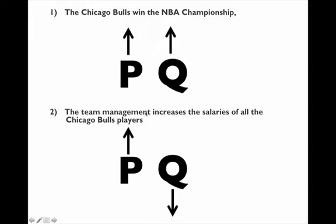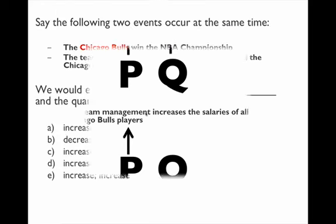So when you look at the answers, that's the one we're looking for: increase and we don't know — increase or decrease. So not this one, not this one. Option C looks like a pretty good one: the price goes up and the quantity, we don't really know.